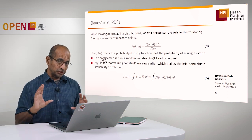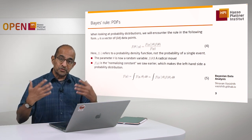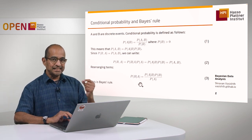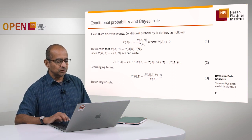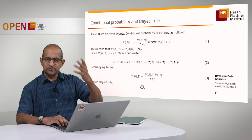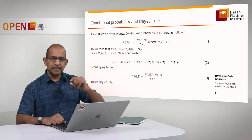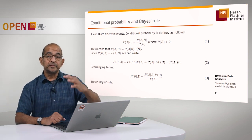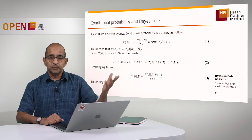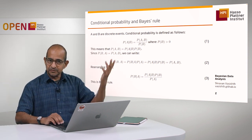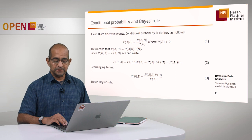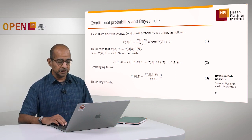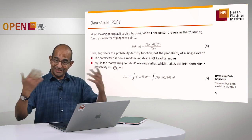We can rewrite Bayes' rule in terms of probability distributions now. Right now I was talking only about discrete events — discrete outcomes where you can compute probabilities. You will have seen lots of small toy problems in probability theory, where you can calculate the probability of actually having a disease when you've tested positive for it. This is the equation we use for computing that: Bayes' rule in the discrete case.